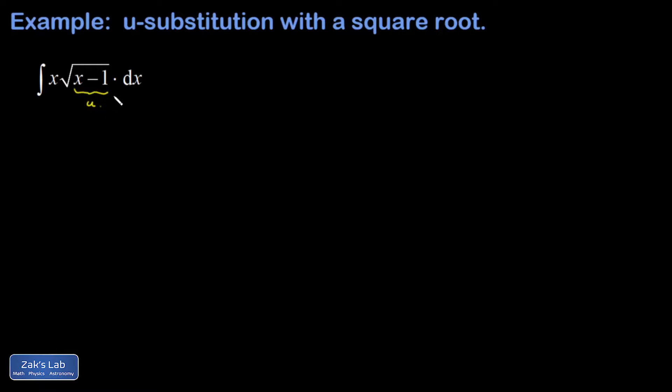So if u is x minus 1, then du is the derivative of that, which is 1 times dx, so just dx. And that would take care of the interior of the square root and it takes care of my differential dx. I'm just going to replace that with du.